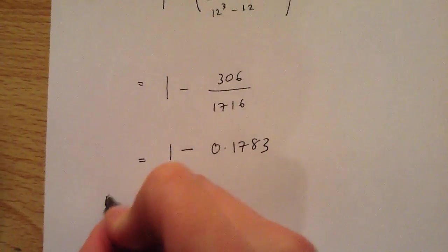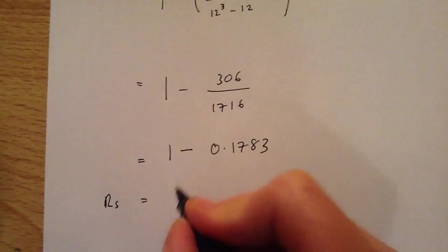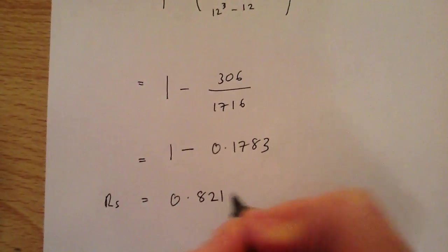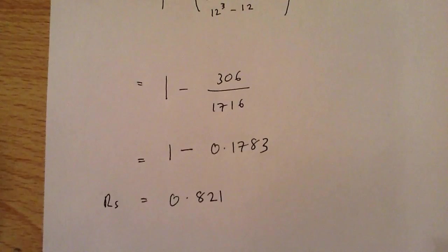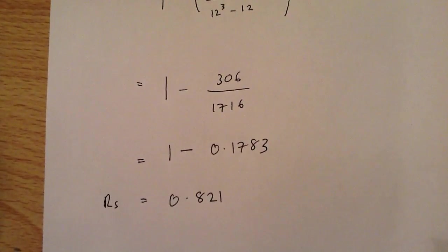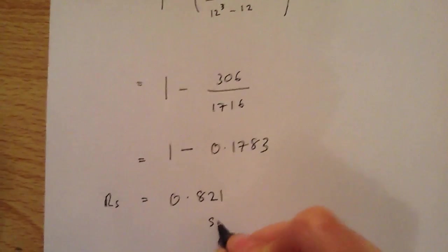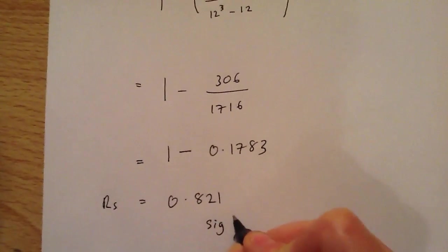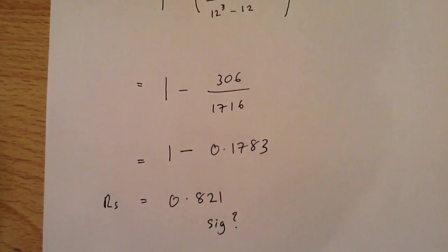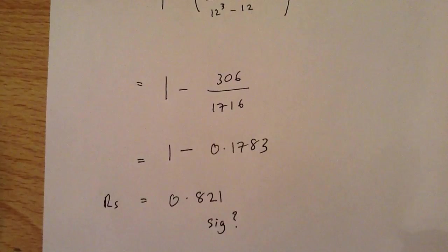We have a final result of Spearman's rank RS = 0.821, which means absolutely nothing by itself — it is just a number. But it is an important number because it tells us if our correlation is significant or not, and whether we can accept or reject our null hypothesis.